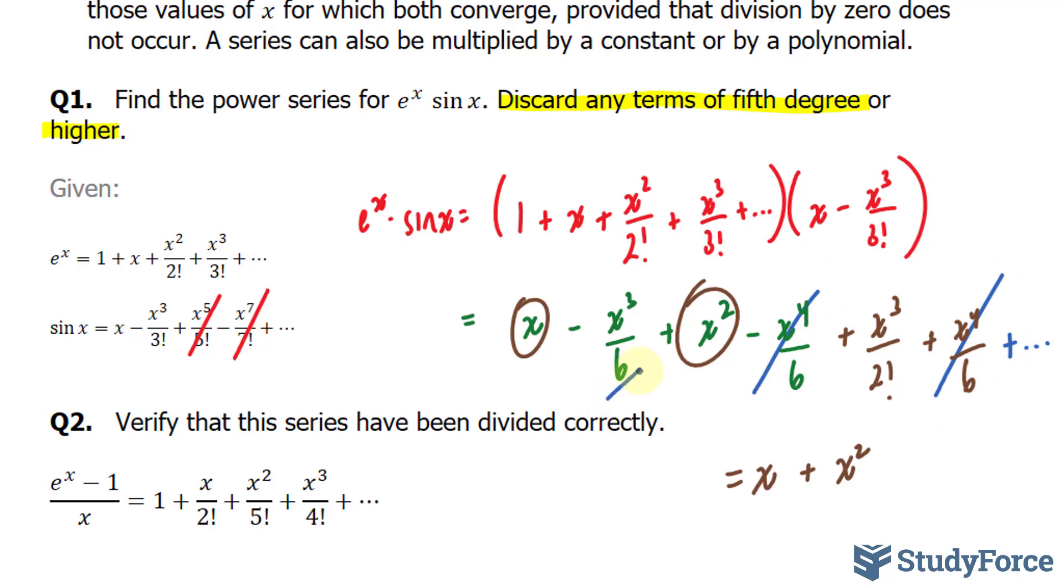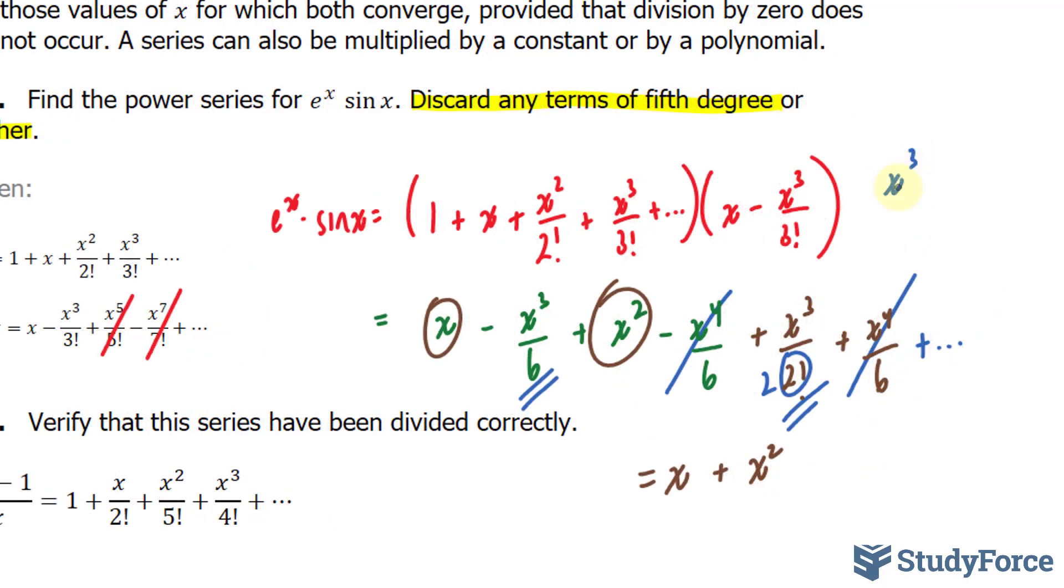And finally, we have this term and this term are alike. This right here is equal to 2, so we have x to the power of 3 over 2 minus x to the power of 3 over 6. That's the same thing as saying x to the power of 3 bracket 1 over 2 minus 1 over 6. Finding a common denominator, multiplying this by 3 and this by 3 gives us 2 over 6. That's equal to a third.